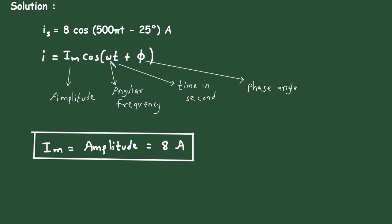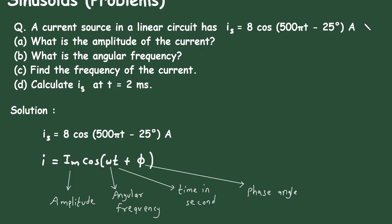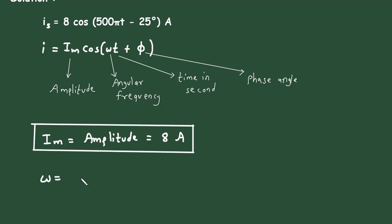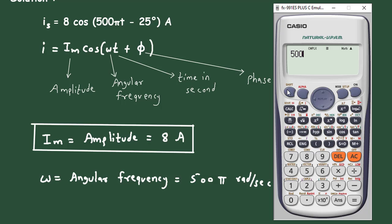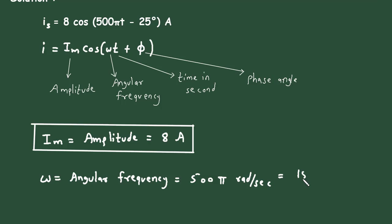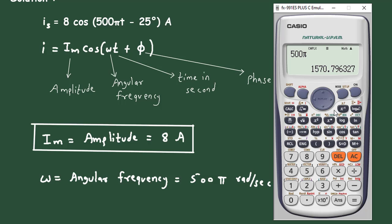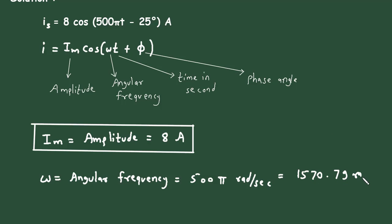Next, we also have to find the angular frequency. So angular frequency ω is equal to 500π radians per second. We can convert this: 500π equals approximately 1570.79 radians per second. So this is the angular frequency.